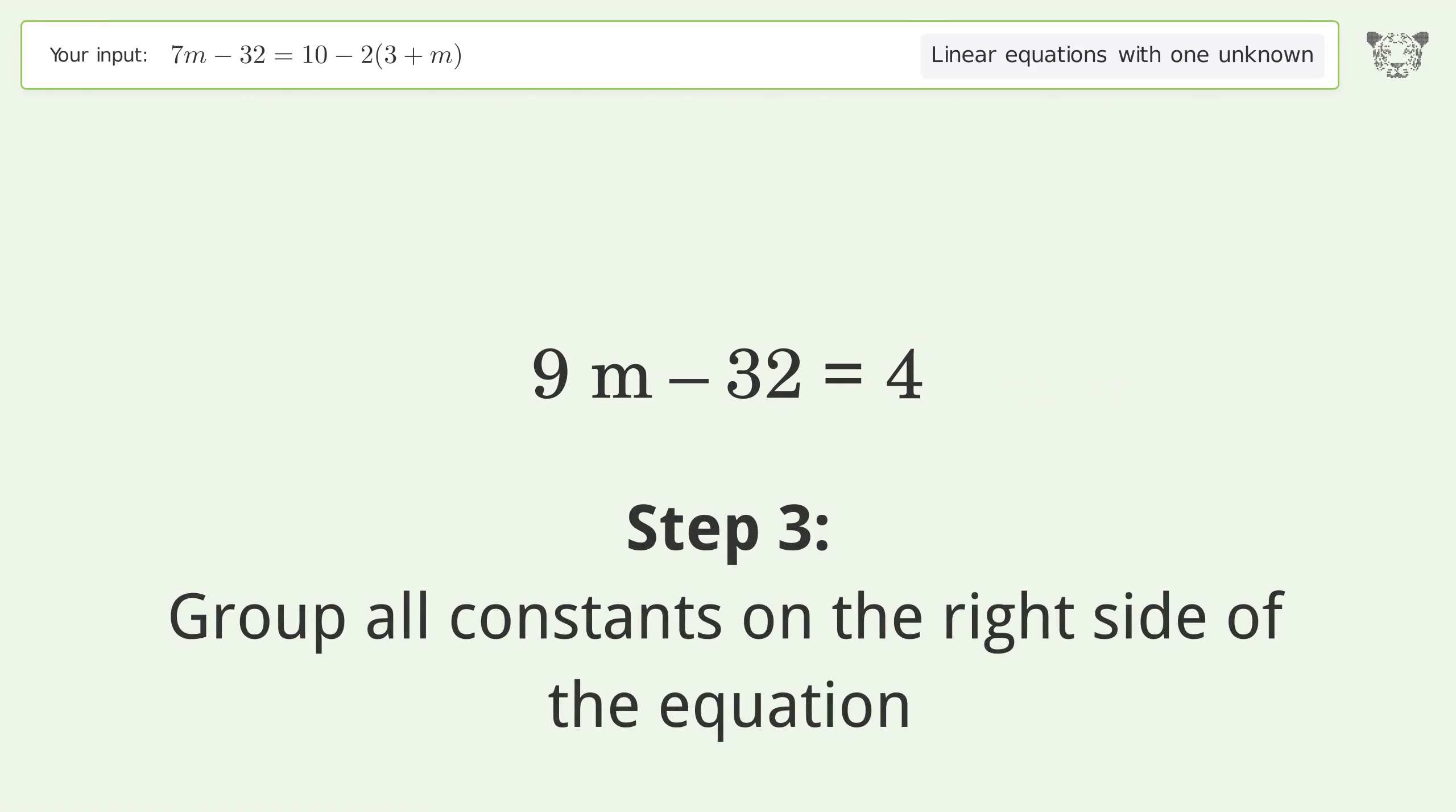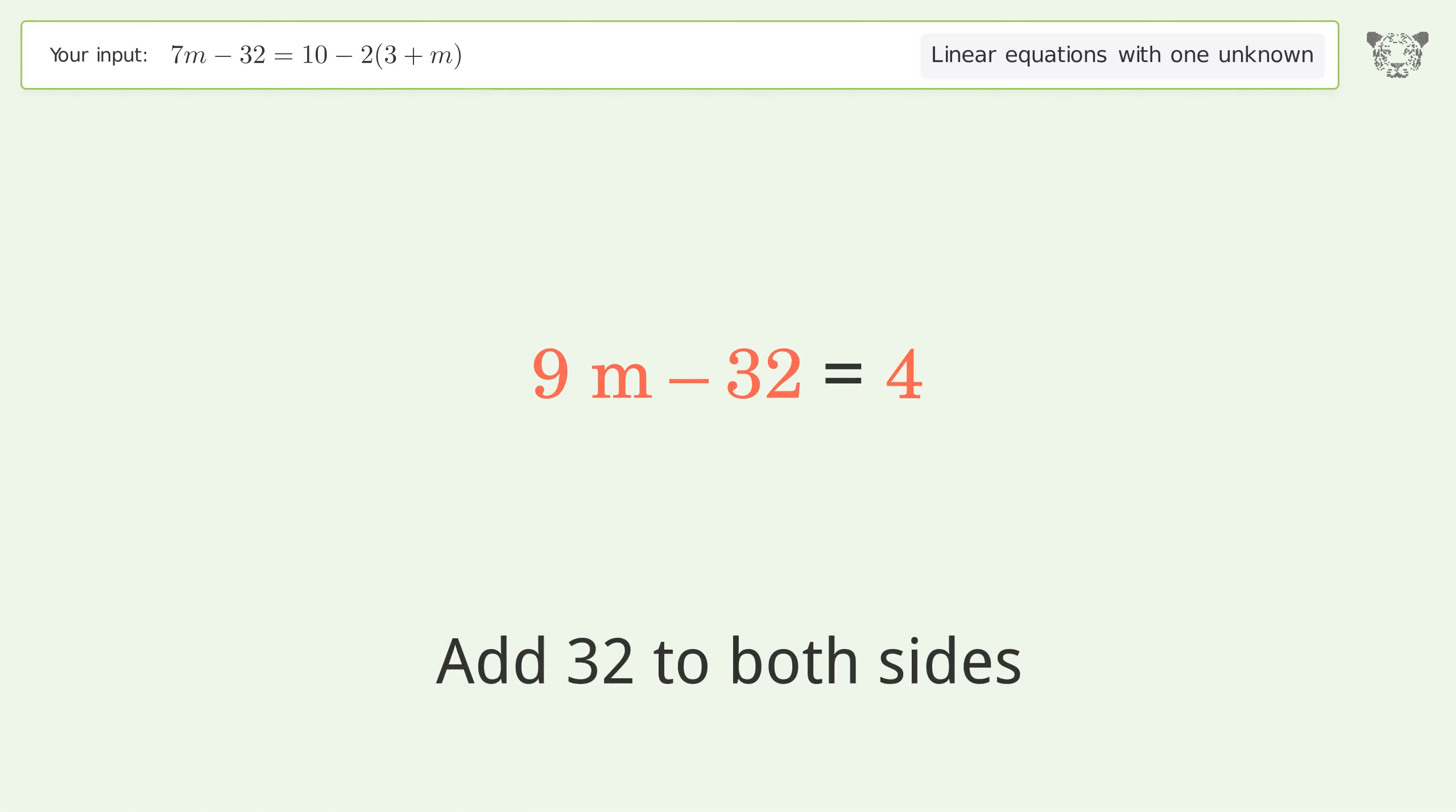Group all constants on the right side of the equation. Add 32 to both sides and simplify the arithmetic.